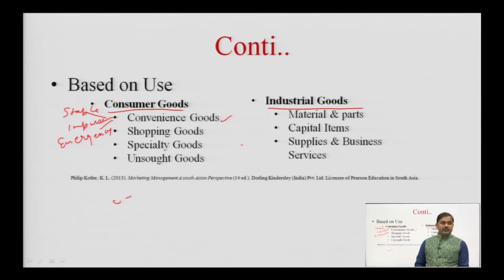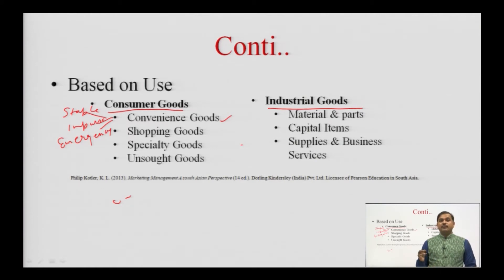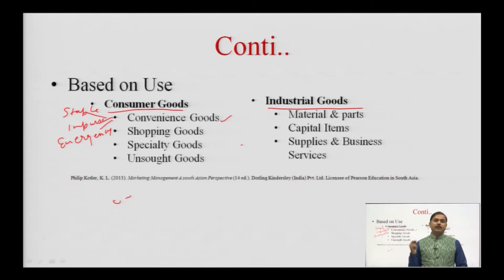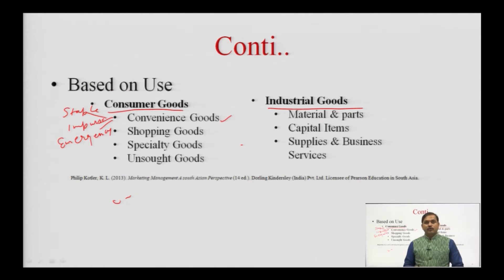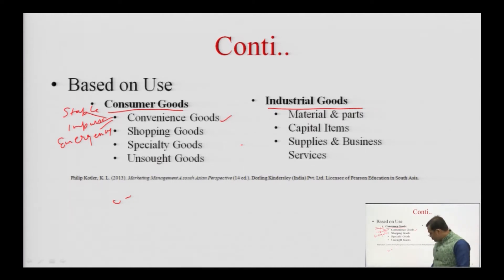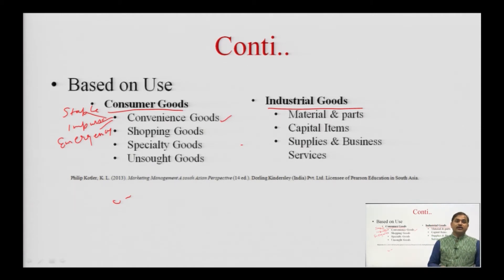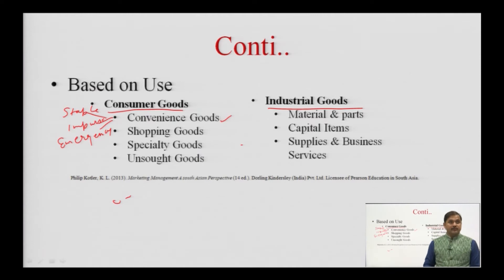Staple goods are those we use on a daily basis — for example, a packet of milk, bread, or butter. Impulse goods are products brought without any prior intention; for example, walking down a street and spotting a Pepsi, chips packet, or buying unplanned items when visiting a mall. Emergency goods are required at the time of an emergency — like needing an umbrella when it is raining, or a candle when the power goes out.